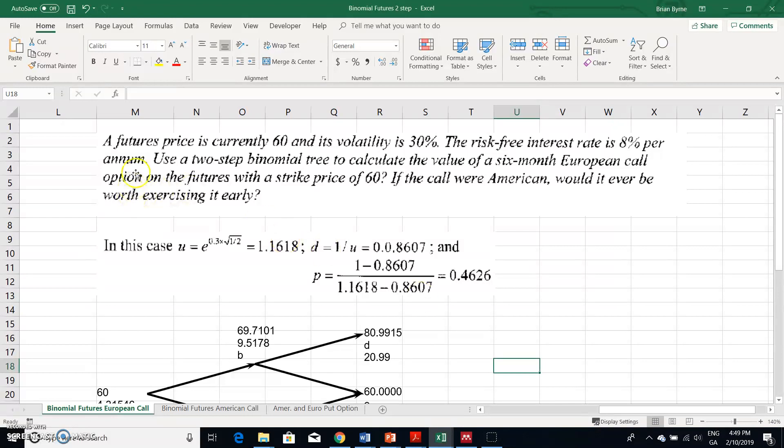Let's take the basic numbers: futures price currently 60, volatility 30%, risk-free rate 8% per annum. Use a two-step binomial tree to calculate the value of a six-month European call option on a futures with a strike price of 60.